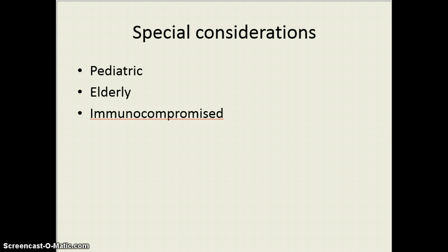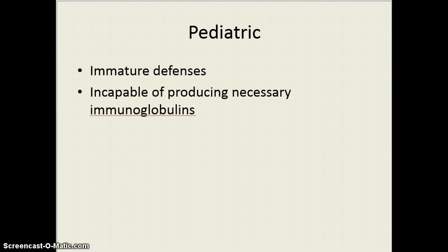Some other special considerations: both ends of the age spectrum — pediatric and elderly — are immunocompromised and always at high risk for infection. Pediatric patients who are not breastfed don't get the colostrum, that initial immunity from the mother. Premature babies have very immature defenses and pose very high risks for infectious processes, and we need to consider whether they are able to produce the immunoglobulins that develop after a year of age.